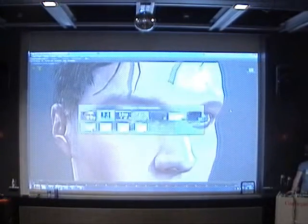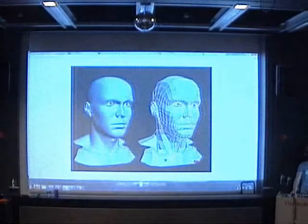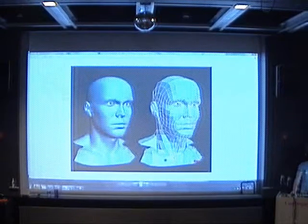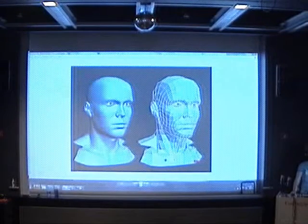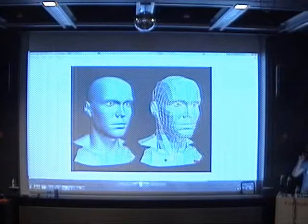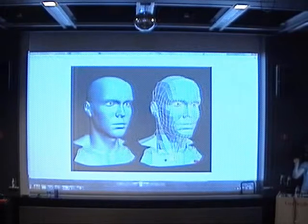For example, I wanted the ambient occlusion from the head to show up on the diffuse of this lacrimal caruncle, but with the normal bake I wanted it to be smooth. In X-Normal you can bake it once with the normal and uncheck everything but this object, and then bake it again with everything checked for getting the diffuse AO.